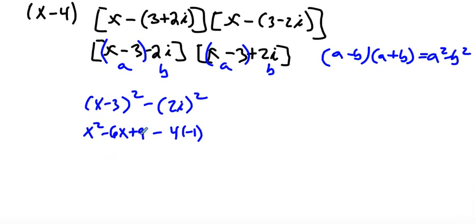Let's go ahead and distribute the negative sign. So we have a negative times 3 is negative 3. Negative times 2i is negative 2i. So I simplified this grouping right here to the same thing over here: x-3+2i.